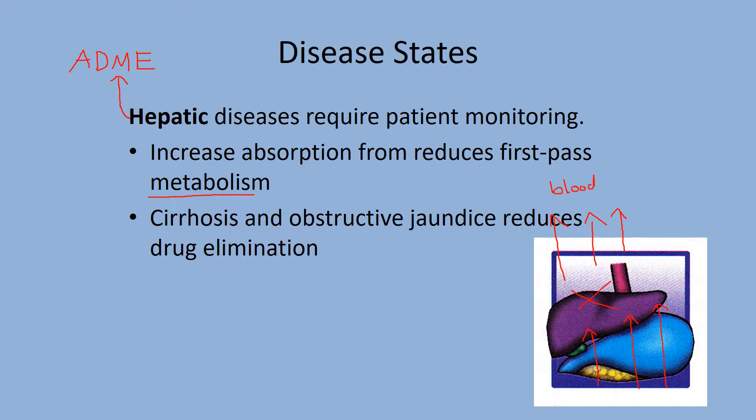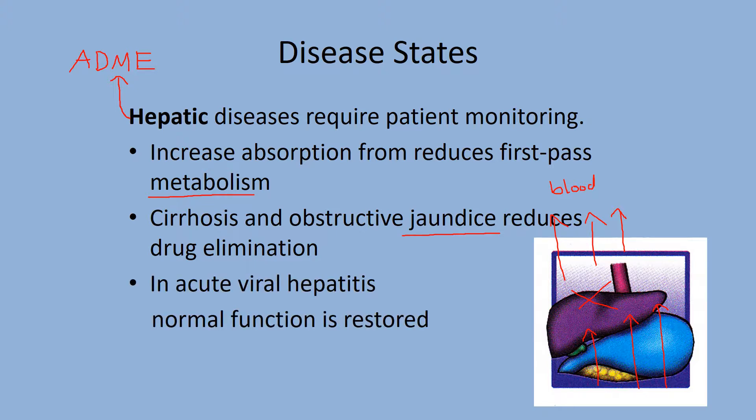Cirrhosis is hardening of the liver and will cause jaundice, as toxins build up in the body and are not excreted. Bilirubin will deposit in your body — that's a waste product — and give you a yellow appearance. Hepatitis A, B, C, and D can affect the liver causing cirrhosis and, since it is a virus, can lead to cancer.